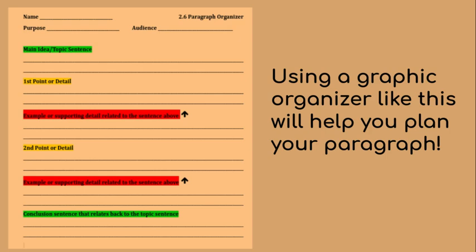Hopefully this graphic organizer looks familiar to you since it's the one that we used in class. Even if you don't have a copy of this you can still make your own, or you can look back at this to remind you of what a 2.6 paragraph needs to include. You'll see here's the first sentence — that's one, two, three, four, five, six.